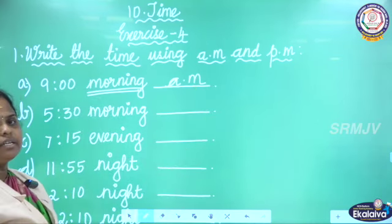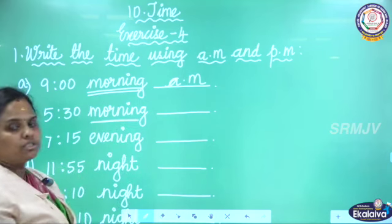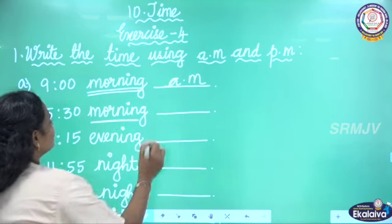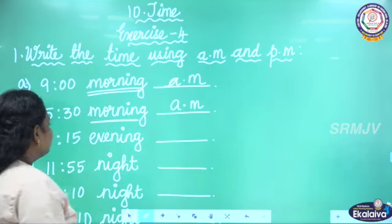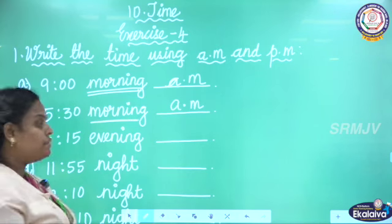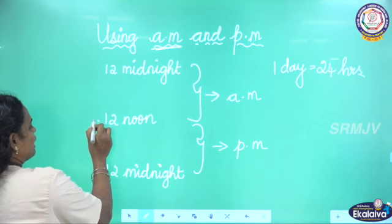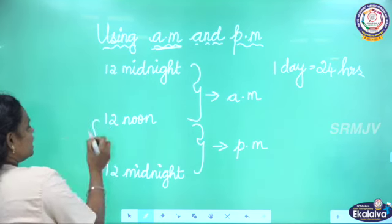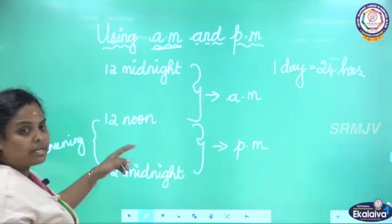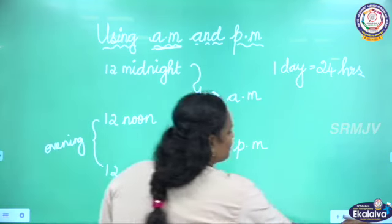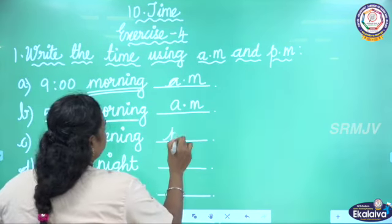5:30 in the morning — so 5:30 AM. Next, 7:15 in the evening. Evening is after 12 noon, so 7:15 evening is PM.